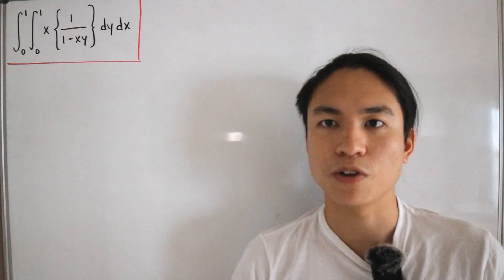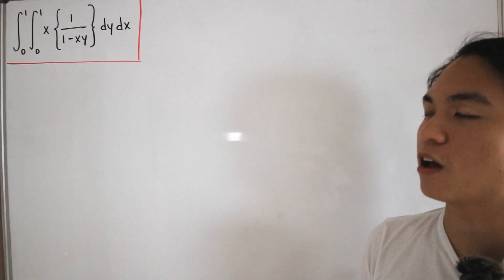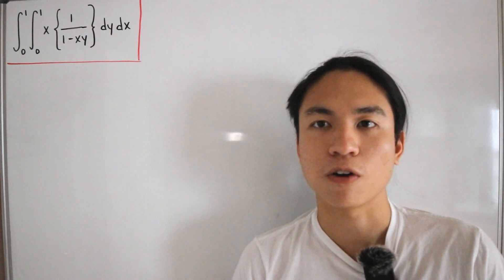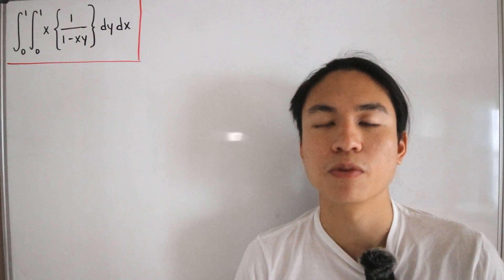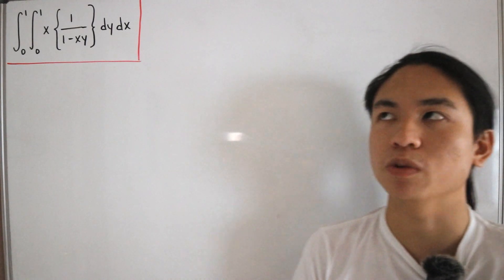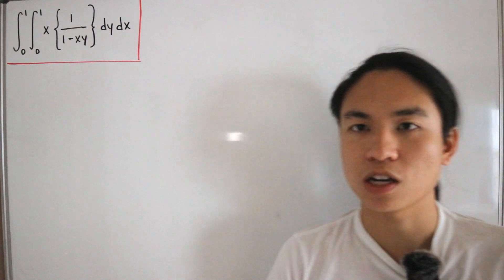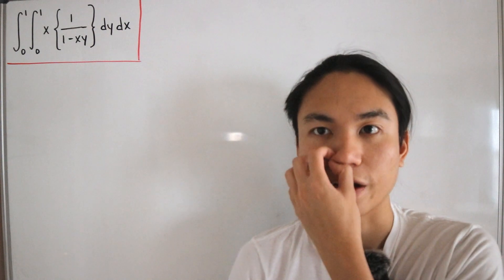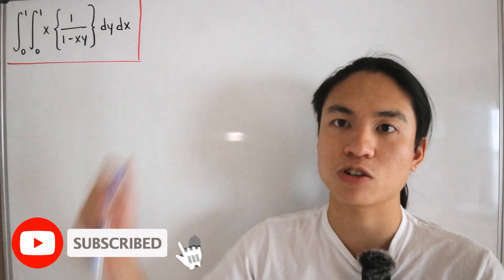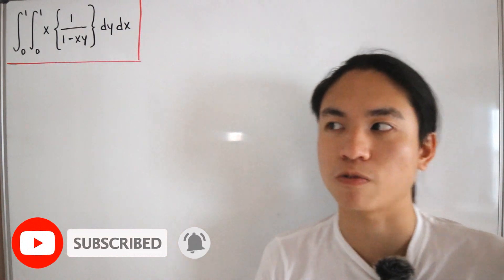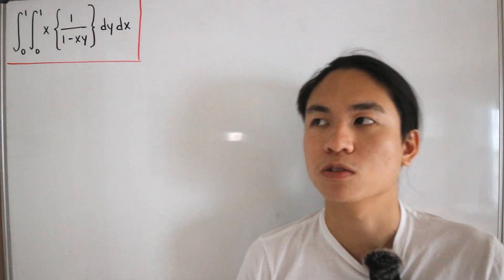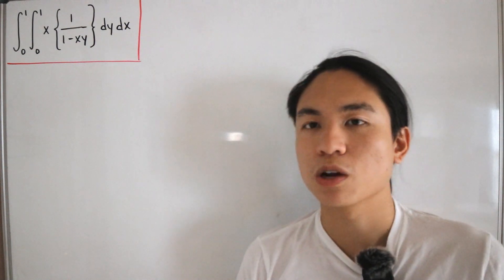We have a double integral with bounds from 0 to 1, 0 to 1, of the integrand x multiplied with the fractional part of 1 divided by (1 minus x times y), followed by dy dx. It may look difficult at first glance given the double integral and the fractional part function involved, but it's actually not as bad as it seems.